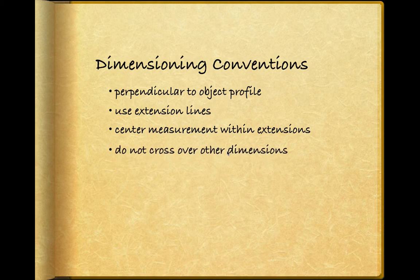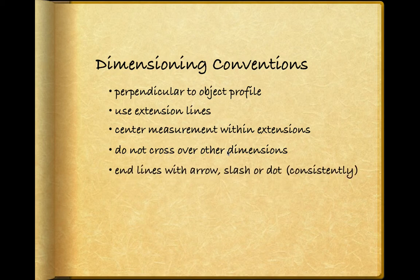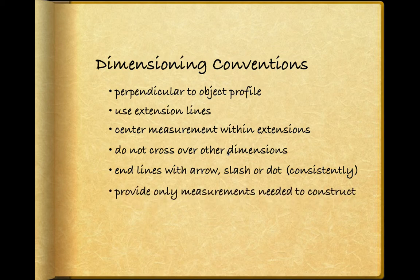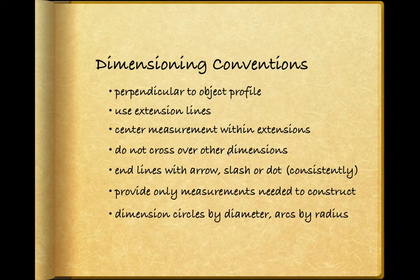We're going to try never to cross over dimensions because that can be confusing. We're going to add end arrows, slashes, or dots at the end of the dimension lines, and we need to be consistent in selecting either an arrow, a slash, or a dot. We're going to provide only the measurements that are needed for full construction. When dimensioning a circle, we'll give its diameter, and when dimensioning an arc, we'll use its radius.